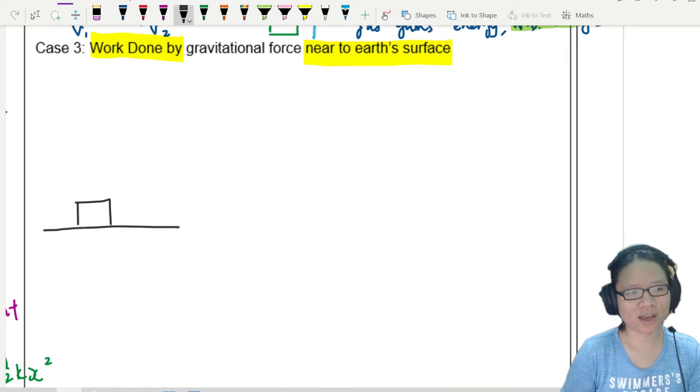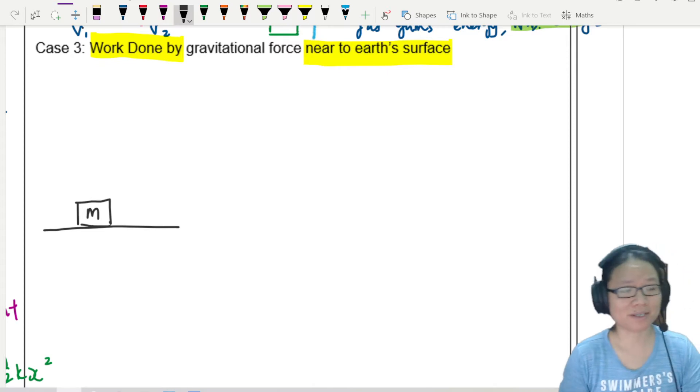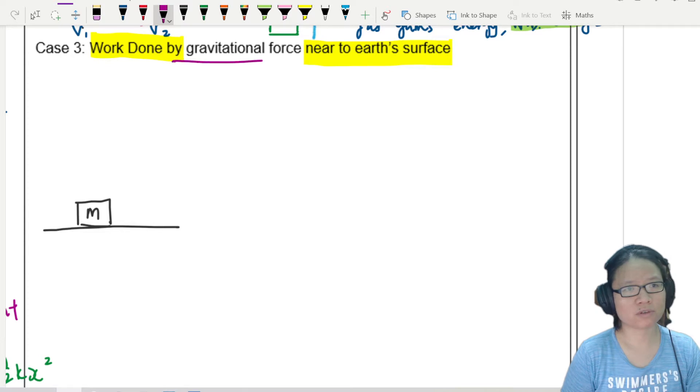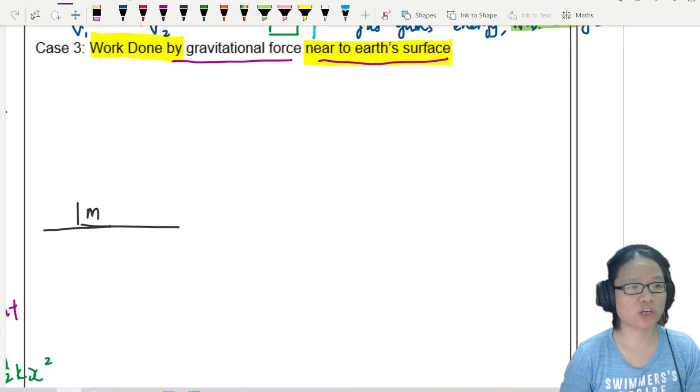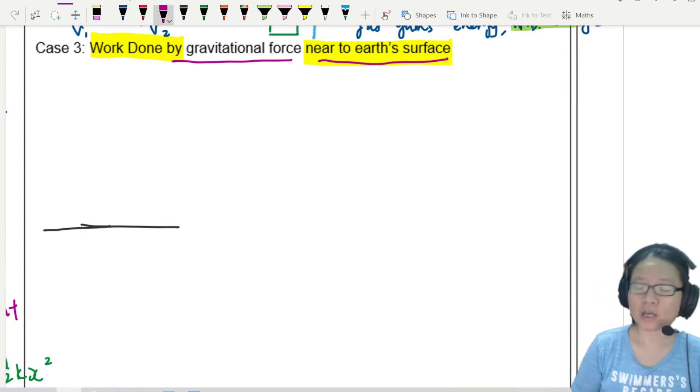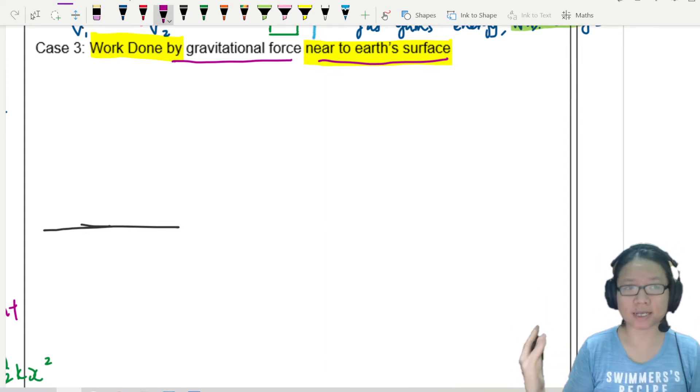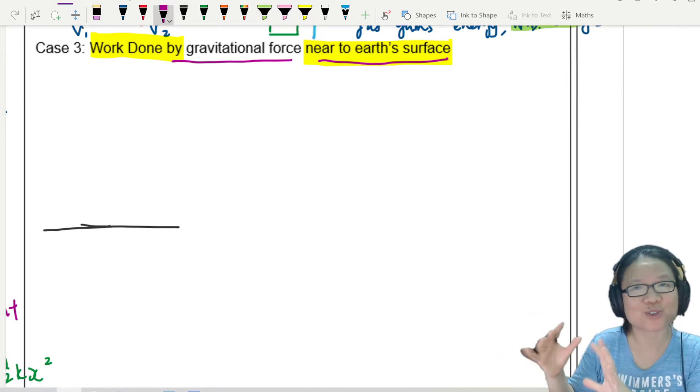But I can talk about, let's say this is the Earth's surface. And then maybe you have a certain mass m. It can be 92 kilos, can be 1 kg, doesn't matter. We can move the mass up and down. But to make our understanding a bit easier, let's say it's work done by gravitational force near to the Earth's surface, this is actually your change in gravitational energy.